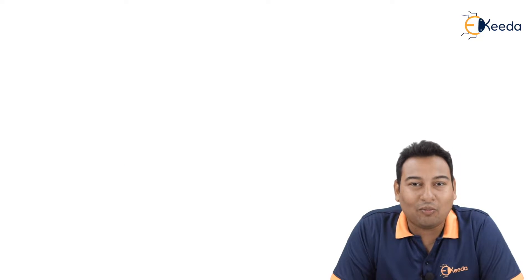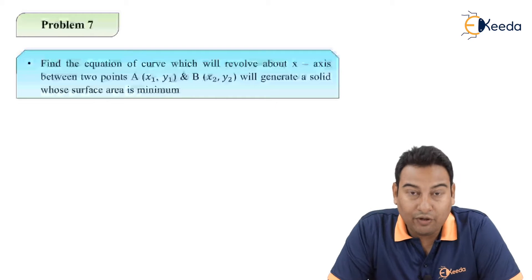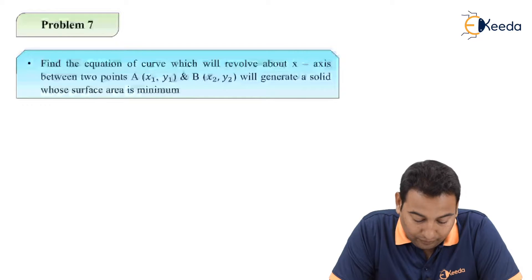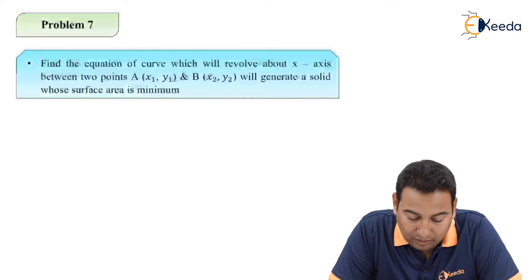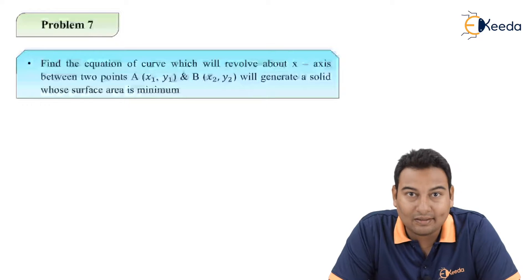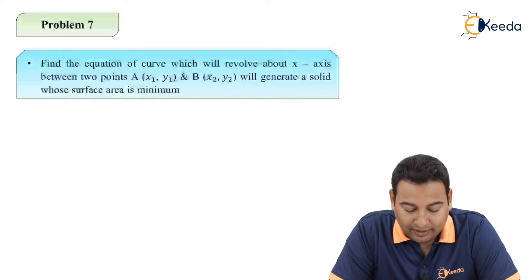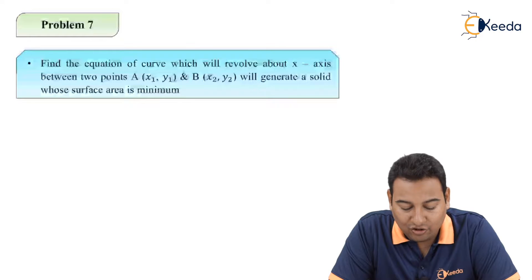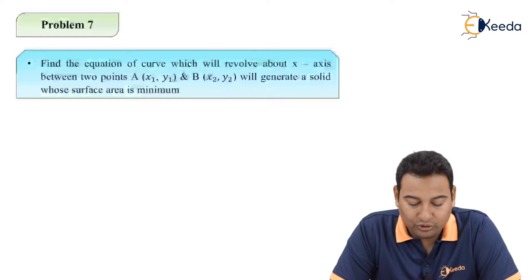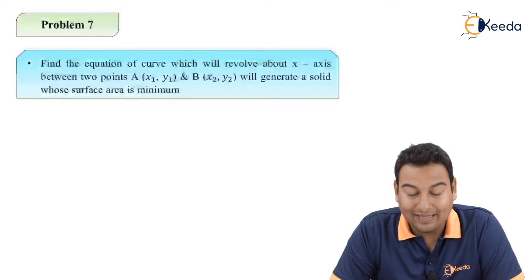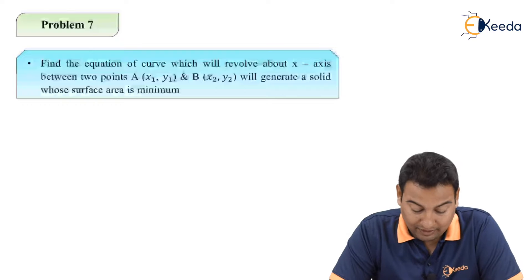Welcome back friends, let's have a look at the given problem. Find the equation of curve which will revolve about x-axis between the two points, capital A (x1, y1) and capital B (x2, y2), that will generate a solid whose surface area is minimum.